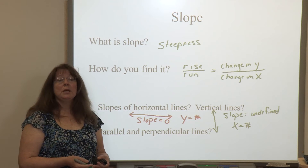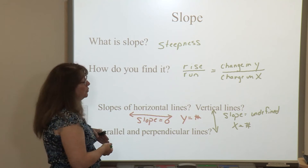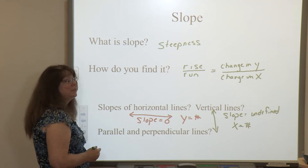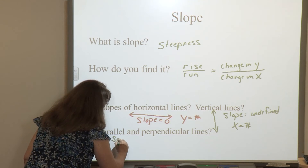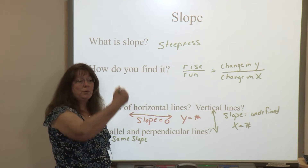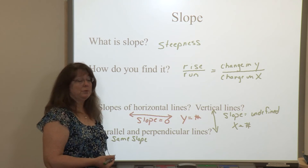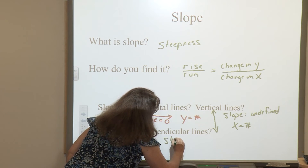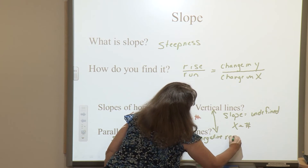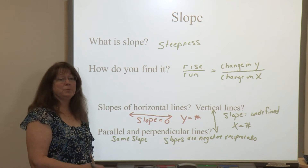Another thing you may be asked about are slopes for lines that are parallel or perpendicular. When you have two parallel lines, they run and never cross each other, staying the same distance apart. So parallel lines have the same slope. Perpendicular lines make a right angle, and their slopes are negative reciprocals of each other.